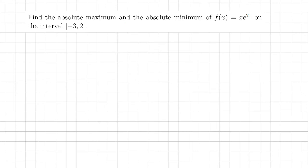Find the absolute maximum and the absolute minimum of f(x) = x·e^(2x) on the closed interval [-3, 2]. Since this is a closed interval, to find the maximum and minimum we need to find the critical numbers of this function. To find the critical numbers, we need to find the derivative.